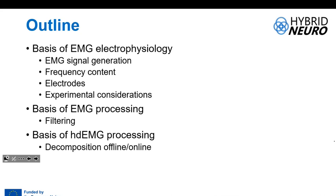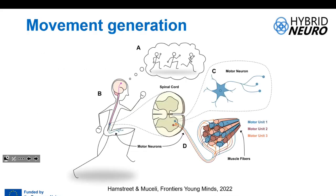This is something that you'll hear more about this afternoon. So whenever we move voluntarily, there is a command that travels, starting at the brain, down to the spinal cord. At the spinal cord, we have motor neurons, and the axon exits the spinal cord to reach the muscles.